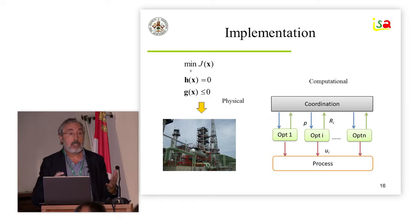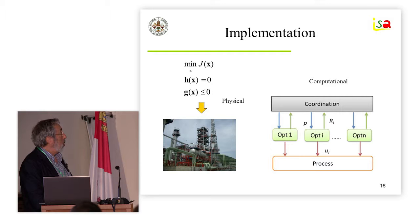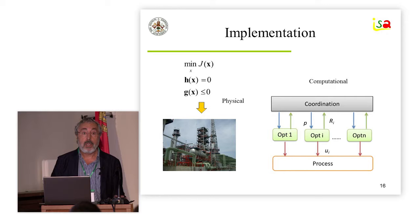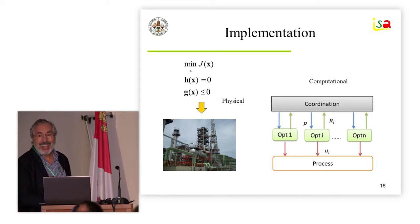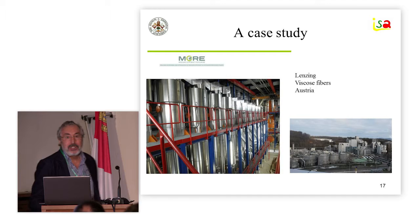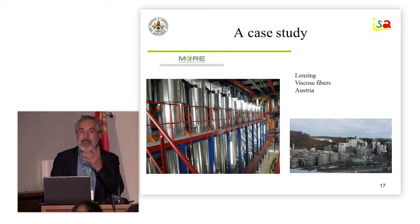The third element on the priorities of research is linked to implementation: you solve your optimization problem, but then you have to translate this mathematics — numbers in a computer — into reality, into the control systems. There are problems of implementation. To illustrate these ideas, I'm going to talk about a real problem.